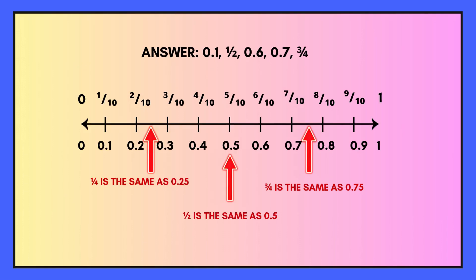The answer is: 0.1, one half, 0.6, 0.7, and finally three quarters.